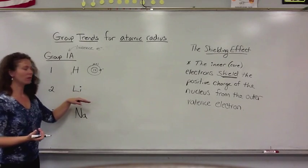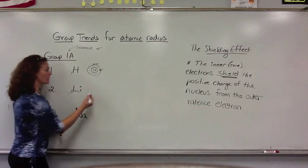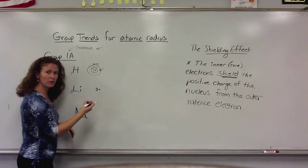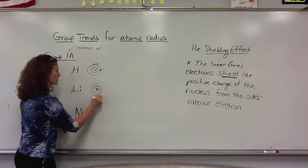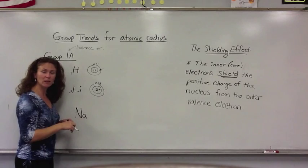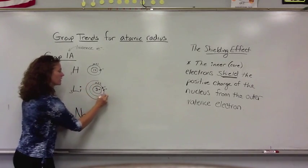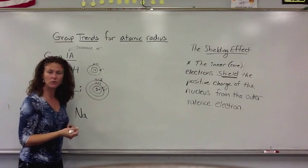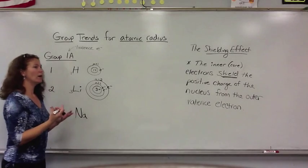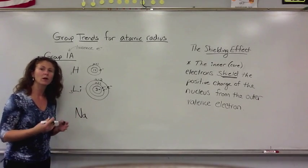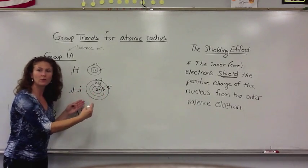As I move down the group, the next element in the second period is lithium. Lithium's atomic number is 3, so it has 3 protons in the nucleus — much more of a positive charge inside the nucleus. On the first energy level (n equals 1) there are two electrons, filling the 1s orbital. The second energy level (n equals 2) begins to fill with one electron. So lithium is going to be larger because we have more electrons and a higher energy level being filled, one that is further away from the nucleus.